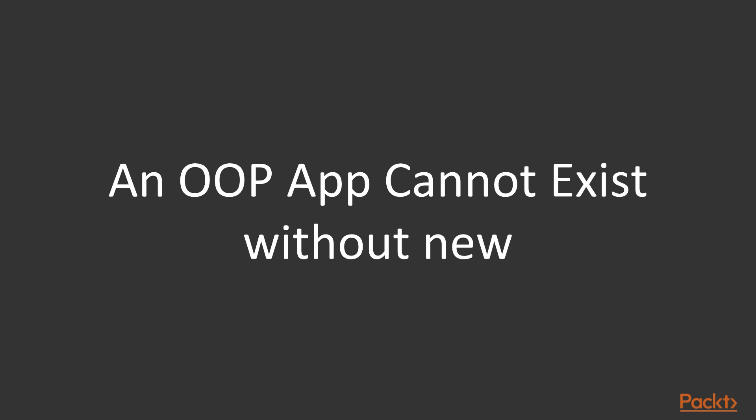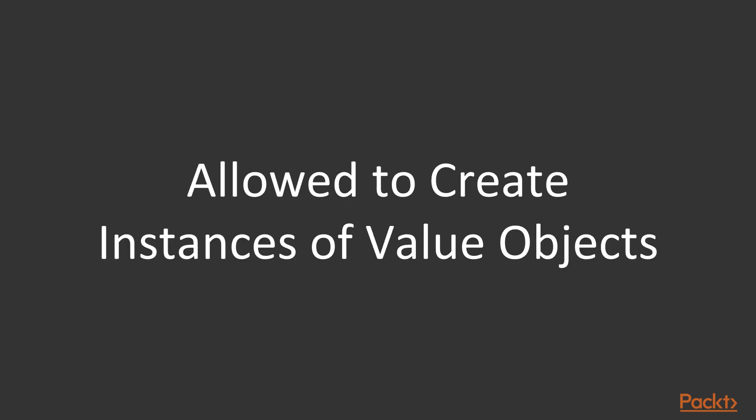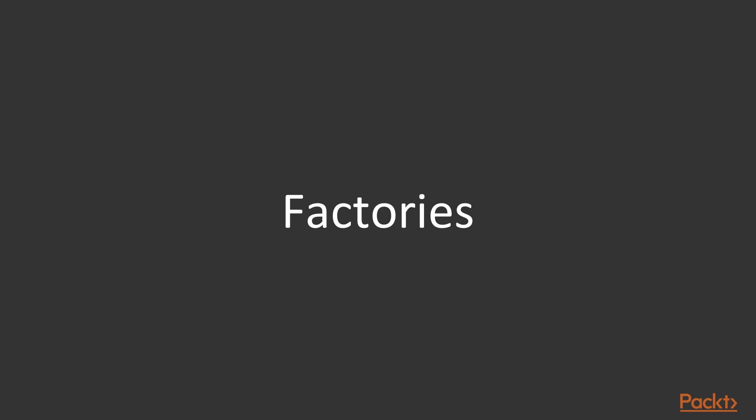This rule is not by any means absolute. You are indeed allowed to new up objects — just be careful not to abuse the new keyword. If you have a value object, a service data object, or generally a short-lived object that does not depend on other entities of your app, you are free to instantiate it using new. Factories are also welcome to use new to create instances, because that's what they're made for — to create instances of objects that have little to no dependencies on real entities in your application.